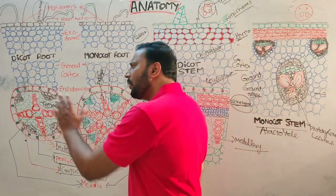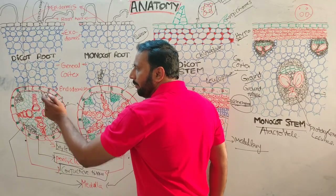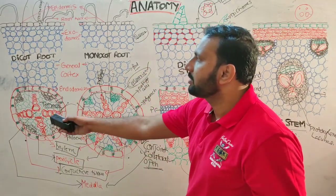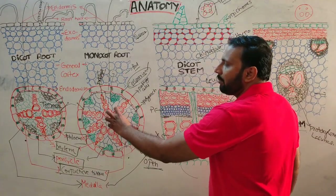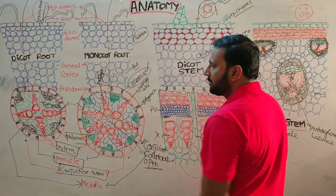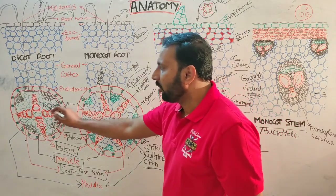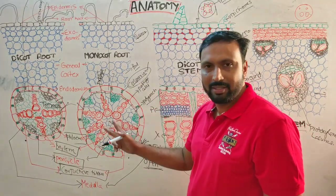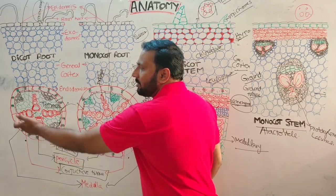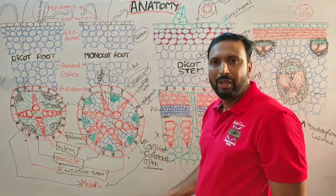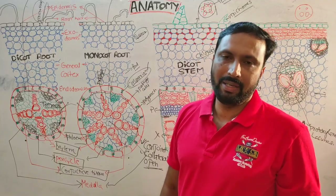In dicot roots, four xylem bundles alternate with four phloem bundles — that condition is called tetrarch. In monocot roots, more xylem bundles alternate with phloem bundles — that condition is called polyarch. Xylem and phloem are present on separate radii, so these are called radial or separate vascular bundles. There is no cambium between xylem and phloem, so they are closed.